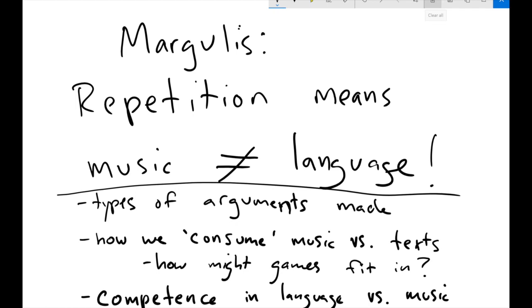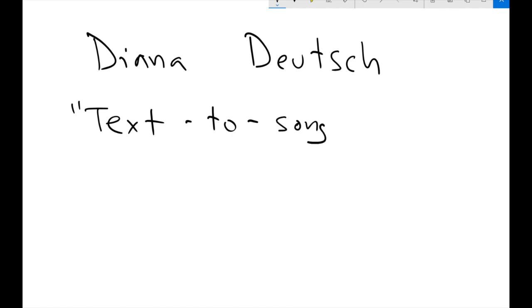Finally, I'd like to drop in another video because Margulis has this really great, famous example by a psychiatrist named Diana Deutsch. Diana Deutsch is a well-known music psychologist. She's taught at the University of California in San Diego for a long time. Margulis cites this sort of text to song illusion that Deutsch discovers unintentionally.